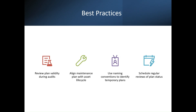Best practices followed in different industries include: reviewing plan validity during audits; aligning maintenance plans with the asset life cycle; using naming conventions to identify temporary plans so they are easily distinguished in maintenance plan lists; and scheduling regular reviews of plan statuses at regular intervals to update, refine, and modify maintenance plans accordingly.